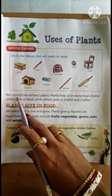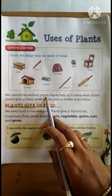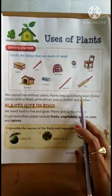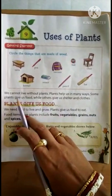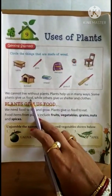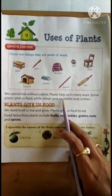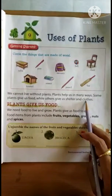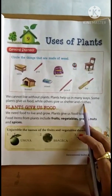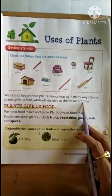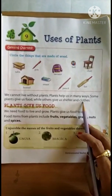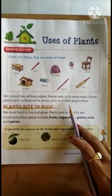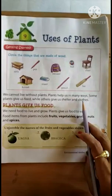We cannot live without plants. Plants help us in many ways. Some plants give us food while others give us shelter and clothes. Without plants we cannot live because we get a lot of things from plants - food, shelter, and clothes.